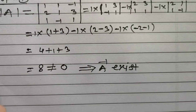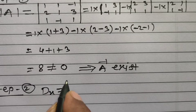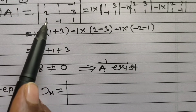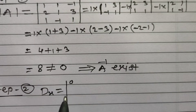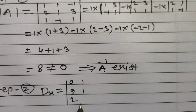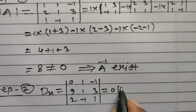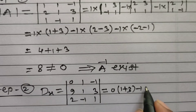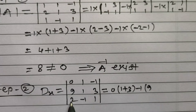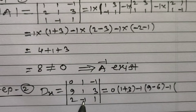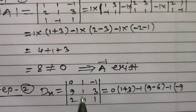Step number 2: find Dx. Dx is the determinant in which the first column of determinant A is replaced by the constant matrix 0, 9, 2. So the matrix becomes: column 1: 0, 9, 2; column 2: 1, 1, minus 1; column 3: minus 1, 3, 1. Expanding: 0 into (1 minus 3 times minus 1 into (9 times 1 minus 2 times 3), minus 1 into (9 times minus 1 minus 2 times 1).